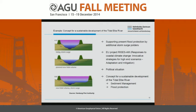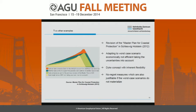The other measure suggested by the Port Authority is to support the present flood protection by providing additional storm surge polders, which we are addressing in an ongoing project with the Hamburg Port Authority. Before concluding, the situation is very special for the estuary. For the mainland, where you cannot apply those types of measures, what could be done is described in the revision of the Master Plan for Coastal Protection in Schleswig-Holstein in 2012.